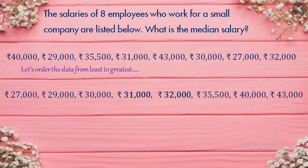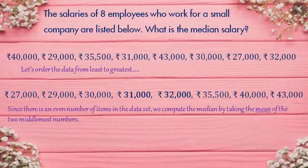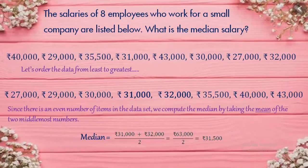Here comes the arrangement. After the arrangement, we cannot find a single middle value from this set of observations. But we can find two middle values — they are Rupees 31,000 and Rupees 32,000. The median will be the mean of these two salaries. It is 31,000 plus 32,000 divided by 2, which is 31,500.